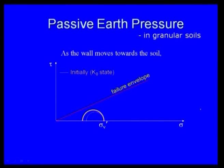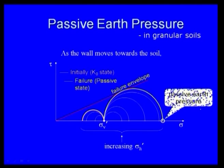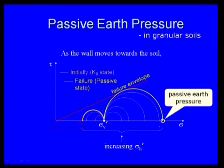As the wall moves toward the soil, sigma-H increases from its initial value until it touches the Mohr-Coulomb failure envelope, at which point failure occurs. This is called the passive state or passive earth pressure.